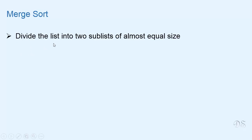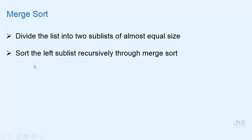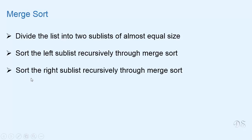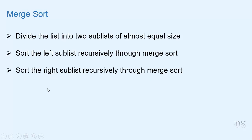First, the list to be sorted is divided into two sublists of almost equal size. Then the left sublist is sorted recursively using merge sort. Then the right sublist is recursively sorted using merge sort. After that, the two sorted sublists are merged to get the final sorted list.